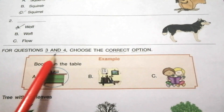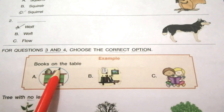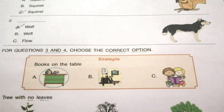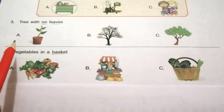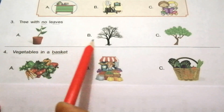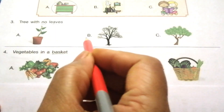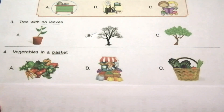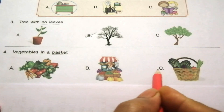For questions 3 and 4, choose the correct option. Example: books on the table — the answer is A. Question 3: tree with no leaves. Look at the given options carefully. The answer is B. Question 4: vegetables in your basket. Look at the given options carefully. The answer is C.